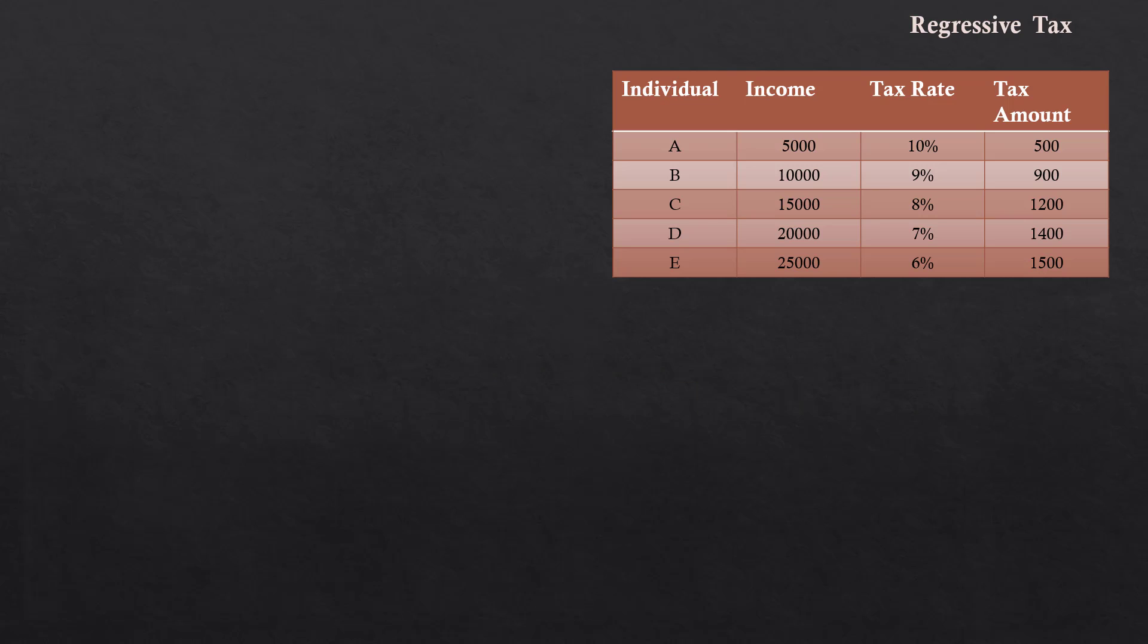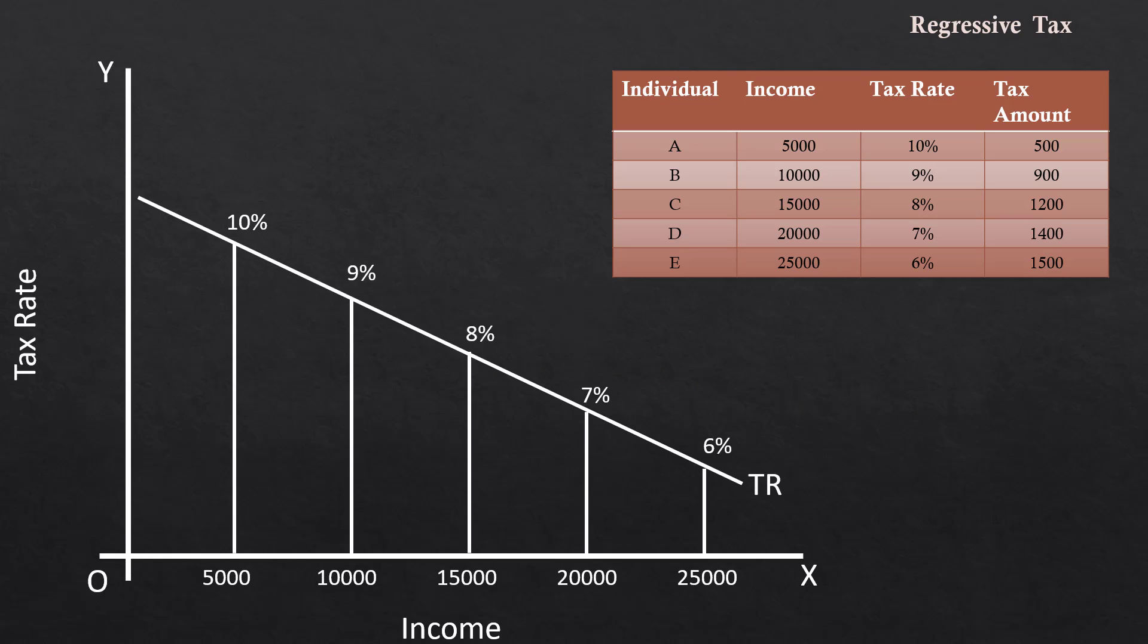Let us represent regressive taxation in the form of a graph. The downward sloping tax rate curve, TR, shows a fall in the tax rate with increase in tax base i.e. income.